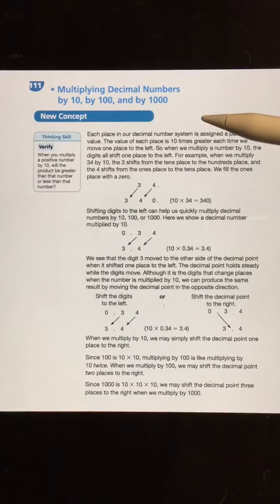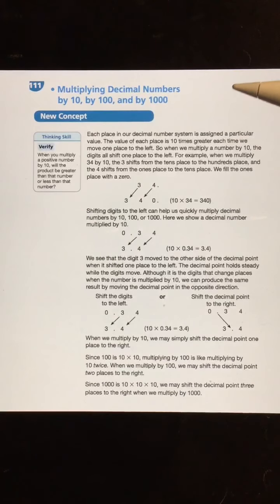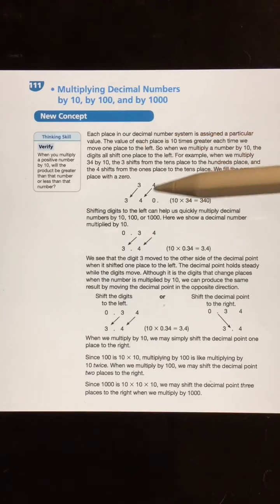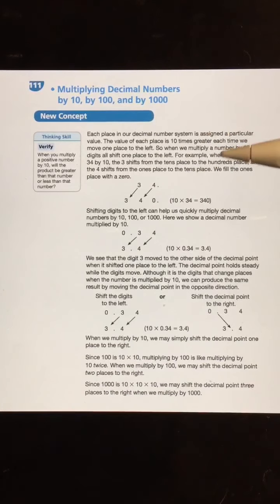Today we are looking at each place of the decimal number system is assigned a particular value. When I'm multiplying, the value of each place is 10 times greater when we move one place to the left. So, here we have 1s, here we have 10s, then we have 100s. It is 10 times greater.